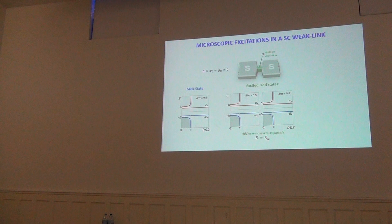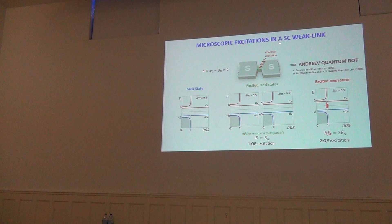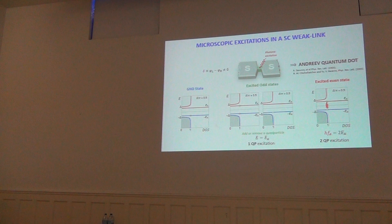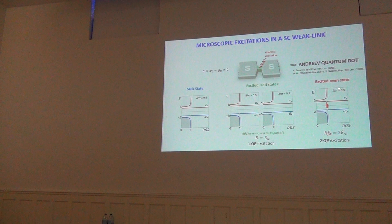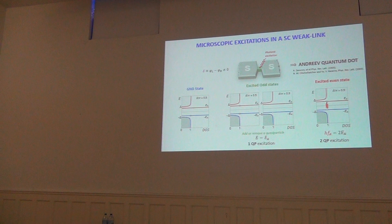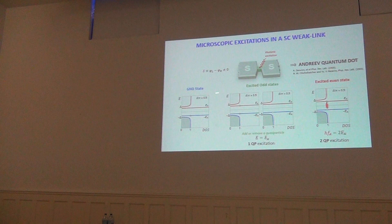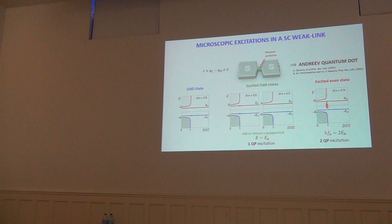There is another type of excitation possible by sending photons. If we tune the photon energy — h times the frequency — to match exactly twice the Andreev energy, we can create a hole in the occupied state and occupy the excited state. This creates two quasiparticles: one hole in the lower state and one electron in the excited state, costing twice EA.